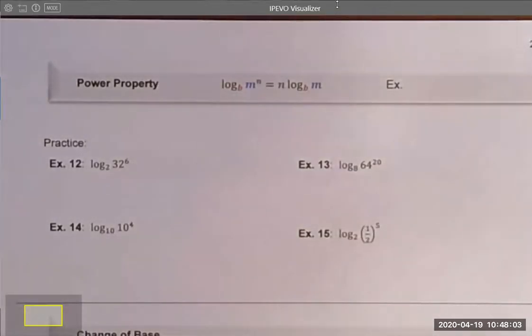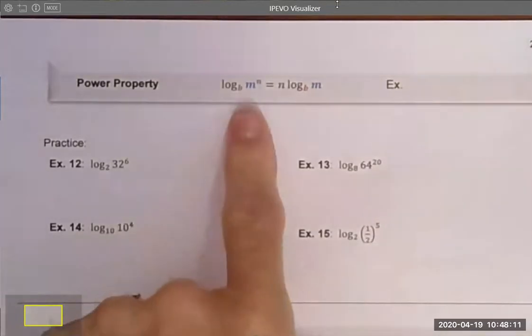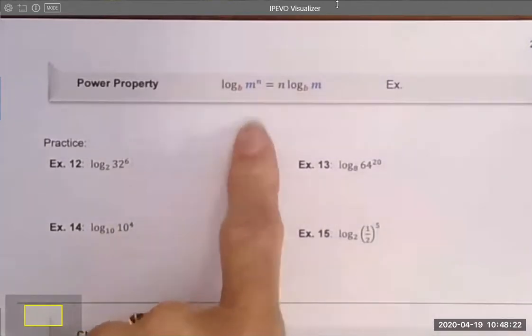In this video we are going to talk about two other properties associated with logarithms. The first one we're going to tackle is the power property. The power property tells us that log base b of m raised to the n power is equal to n times log base b of m.